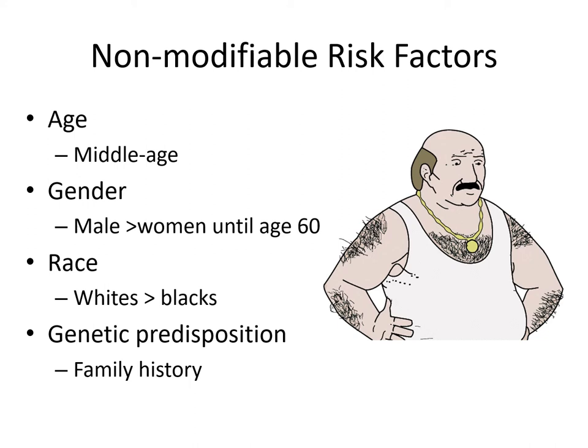Let's look at who is most likely to have risk factors for developing coronary artery disease, beginning with the non-modifiable risk factors — things we cannot change. These include age; we start to see more coronary artery disease associated with middle-aged people. Certainly gender: we see coronary artery disease mostly in men versus women, at least up until the age of 60. These are risk factors — there are plenty of women under 60 who have coronary artery disease. It's simply stating that men have a higher risk.